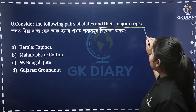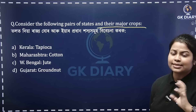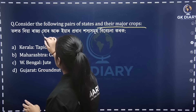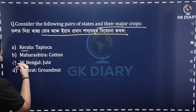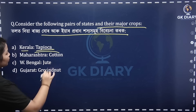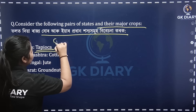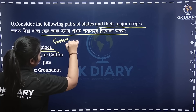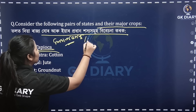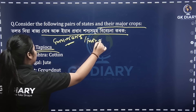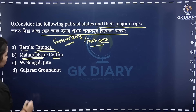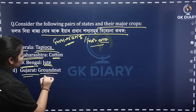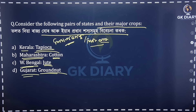Consider the following pairs of states and their major crops. What are the crops? What are the states? The options include tapioca, cotton, West Bengal and jute, and Gujarat and groundnuts.